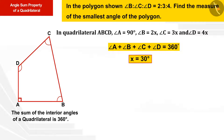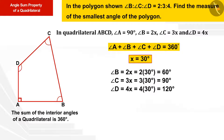Using x = 30°, we find angle B = 60°, angle C = 90°, angle D = 120°. Angle B is the smallest angle of the polygon, which is 60 degrees.